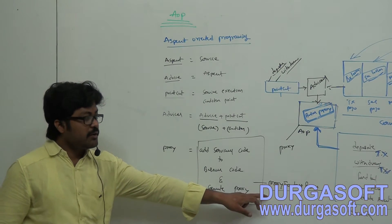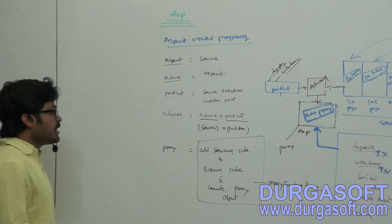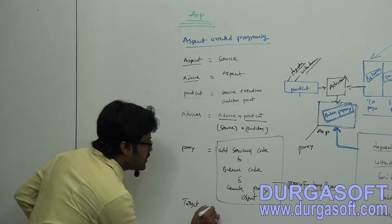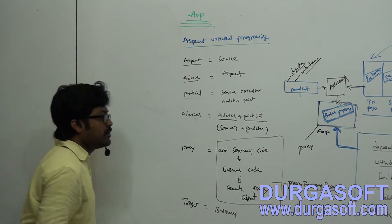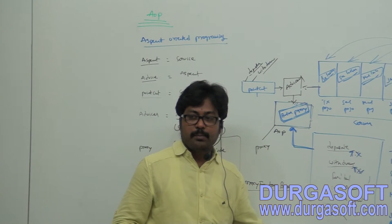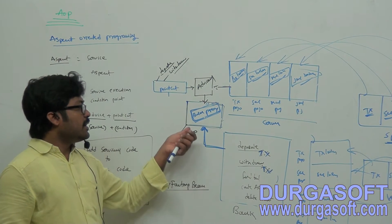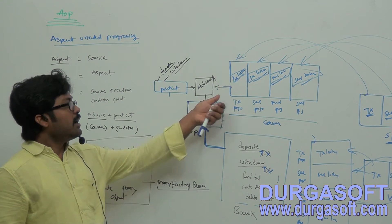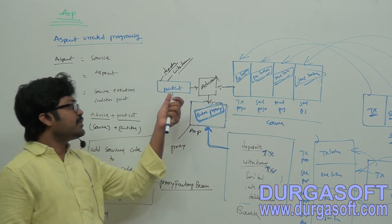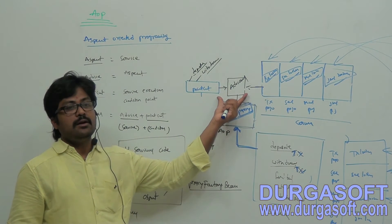This proxy factory will always write about business. They used to call business like targets. Target means your business — these are AOP keywords. As per AOP, your bank class is the target. This bank is the target, this one is the proxy, and these are advisors or aspects. This one is the pointcut. Finally, who will combine this pointcut and service is the advisor.